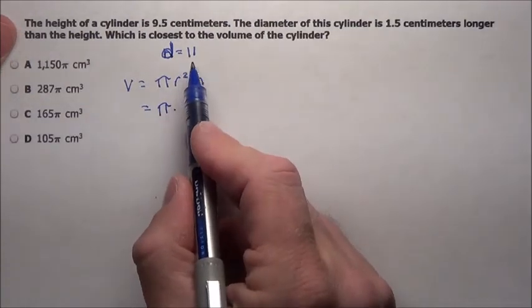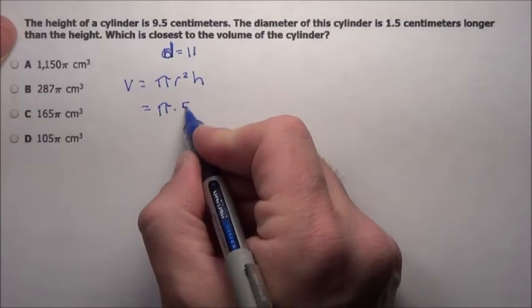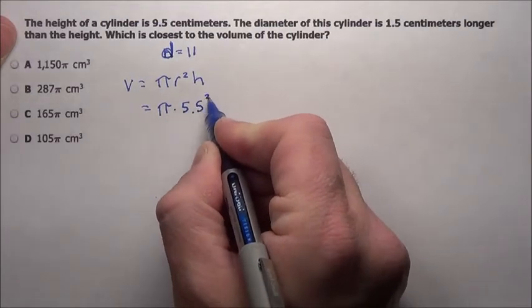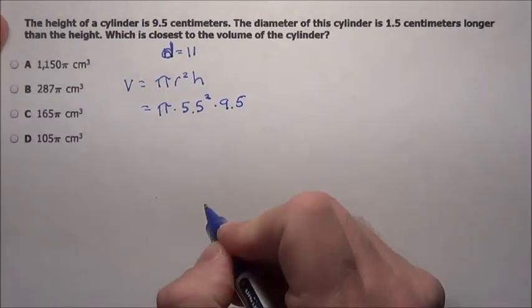Pi times the radius—the radius is half of that, 11 divided by 2 is 5.5. So I'm going to simply do 5.5 squared times the height, 9.5.